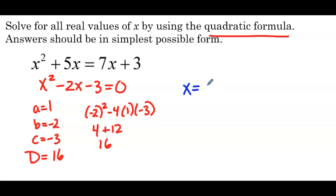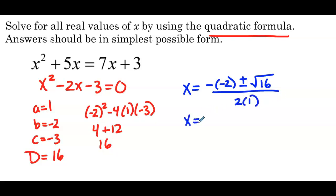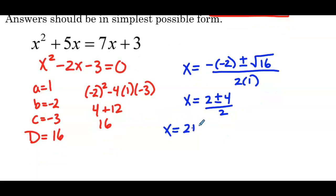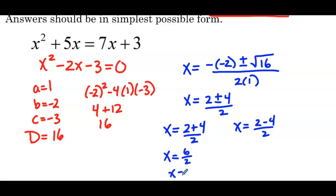So x equals the negation of b, so negative negative 2, plus or minus the square root of the discriminant which is 16, all over 2a which is 2 times 1. Simplifying: we have positive 2 plus or minus 4 over 2. We can't do 2 plus or minus 4 simultaneously, so we split them up. x equals 2 plus 4 over 2, which is 6 over 2, so x equals 3. And x equals 2 minus 4 over 2, which is negative 2 over 2, so x equals negative 1. Our solution set is x equals negative 1 or positive 3.